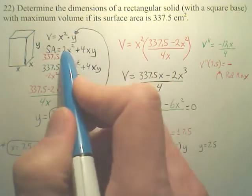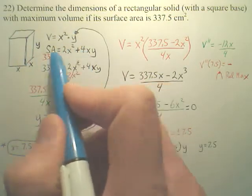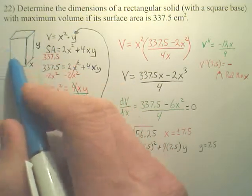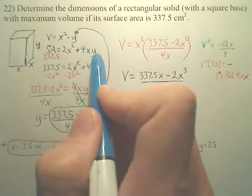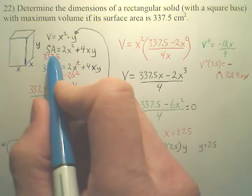The surface area - well, the area of the base, there's a top and a bottom, that's two x squareds. And then each side is x times y, and there's four of them wrapping around. There's four xy's and two x squareds. I know this is 337.5.